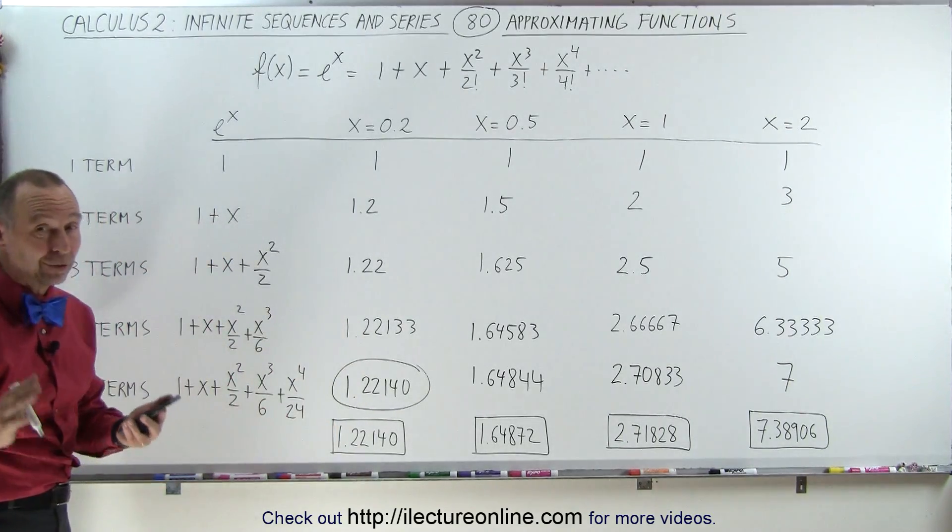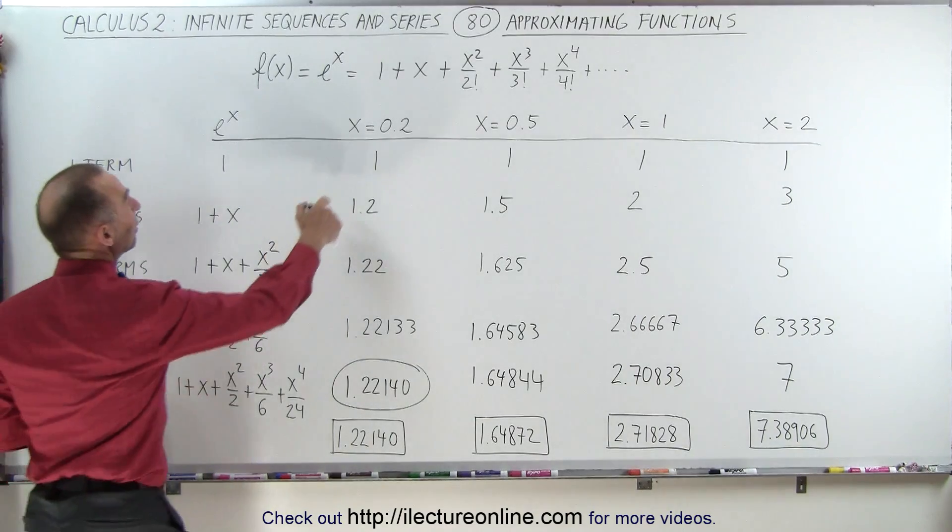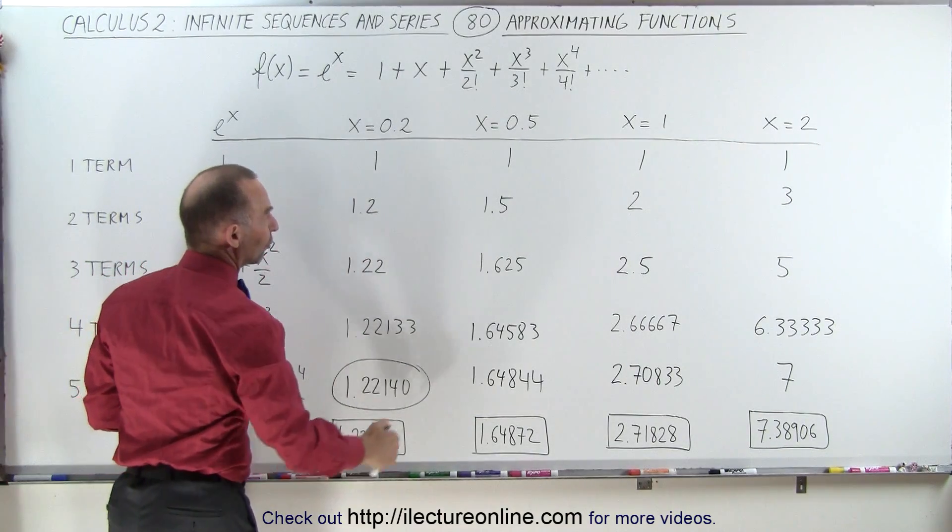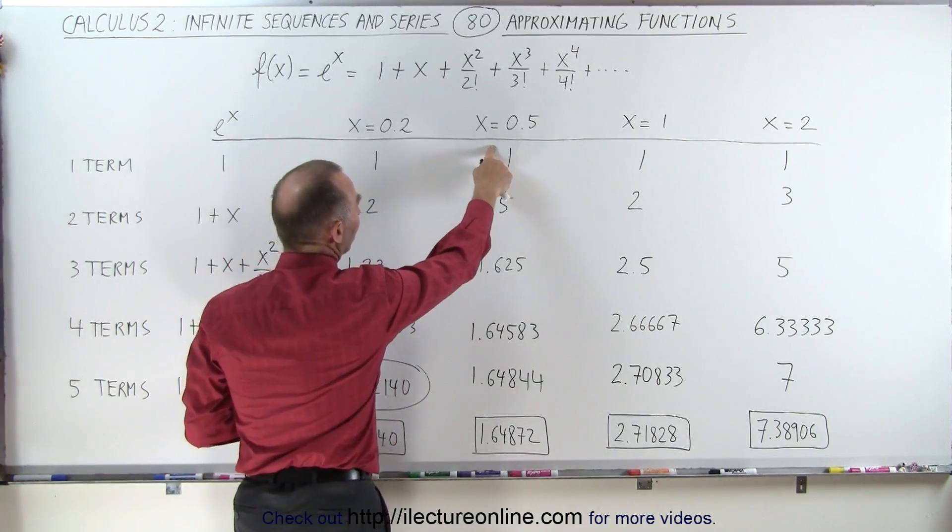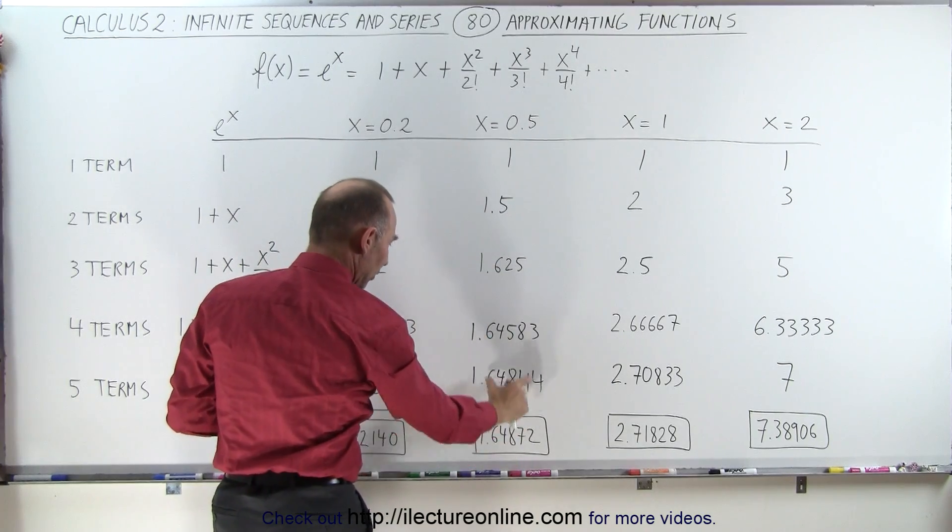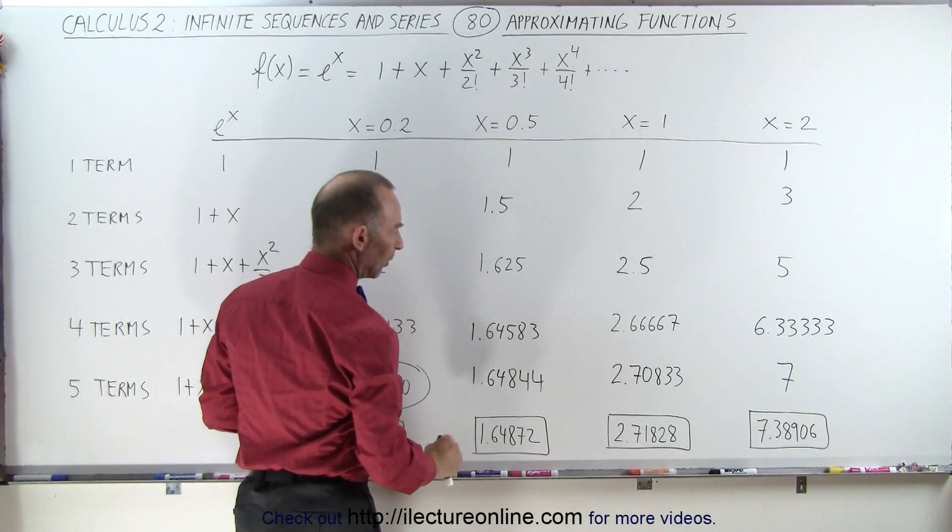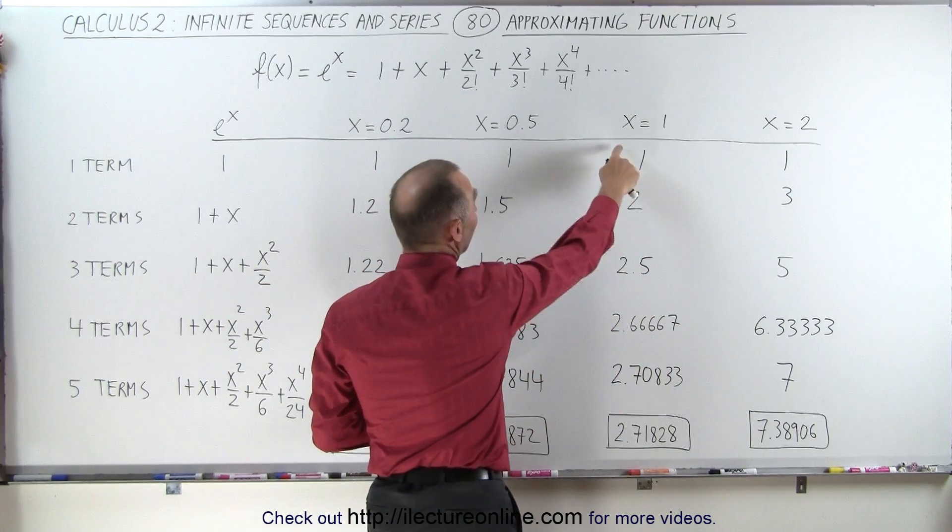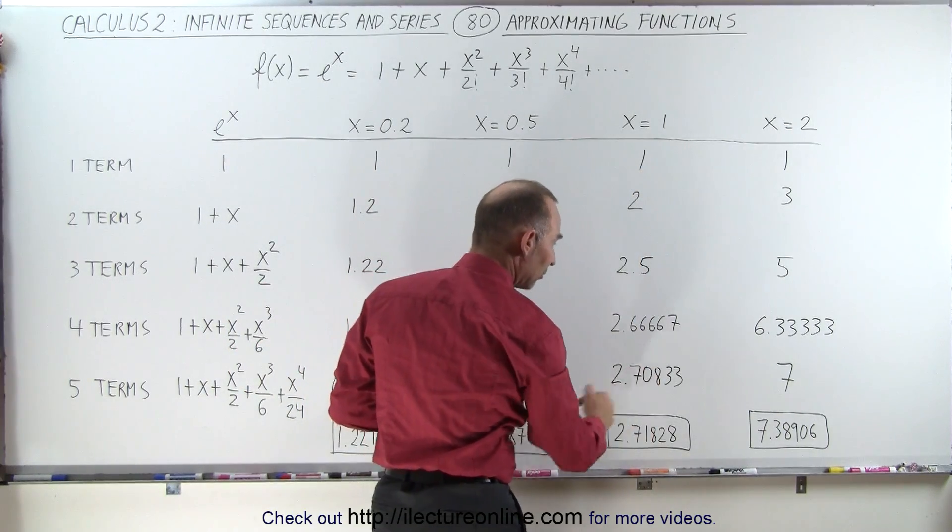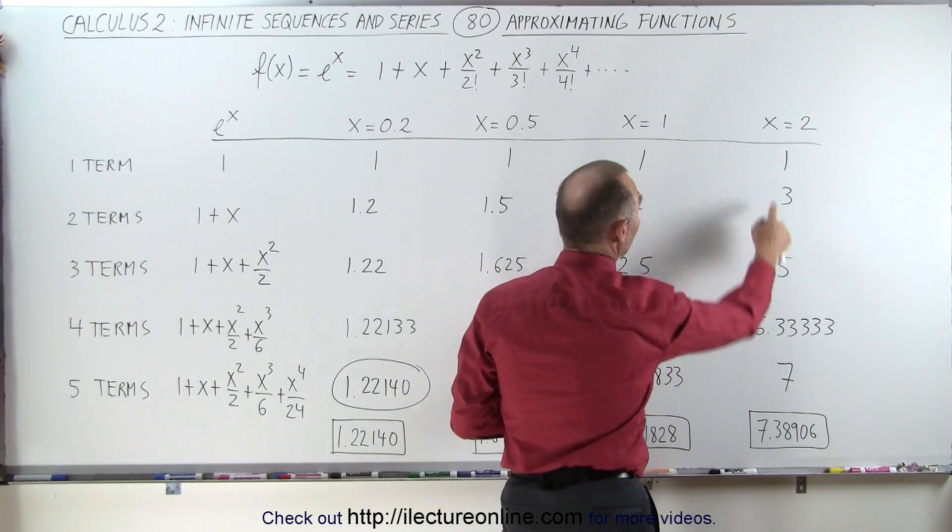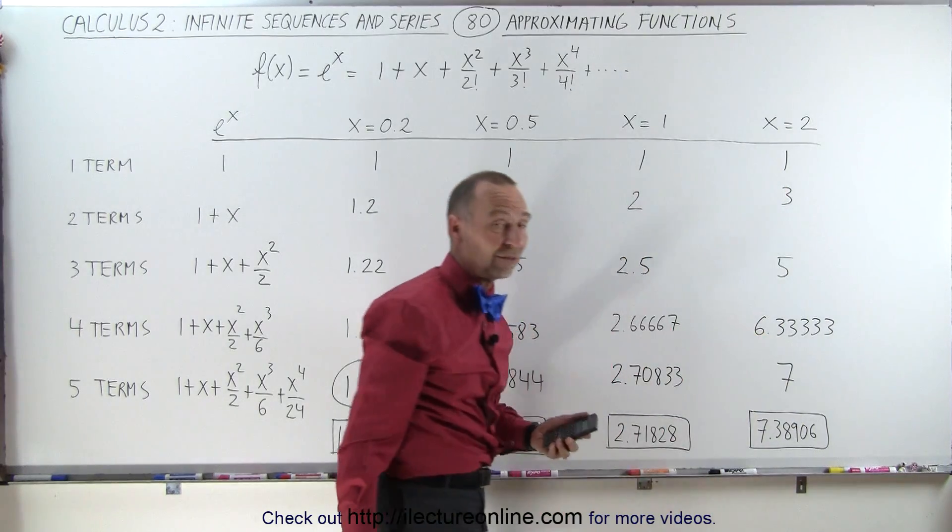Of course, when we use x equals 0.5 or e to the 0.5 power, we only have the first three decimal places. When we use x equals 1, we only have the first decimal place. And when we use x equals 2, we don't have the first decimal place yet.